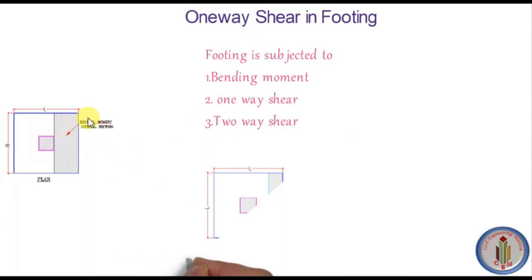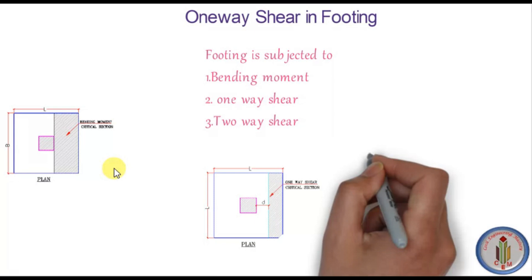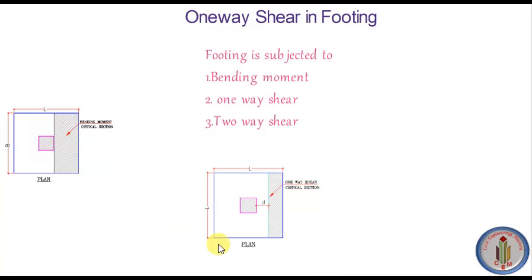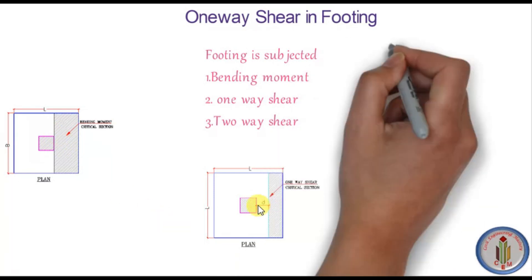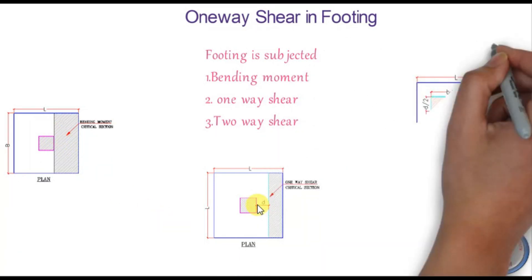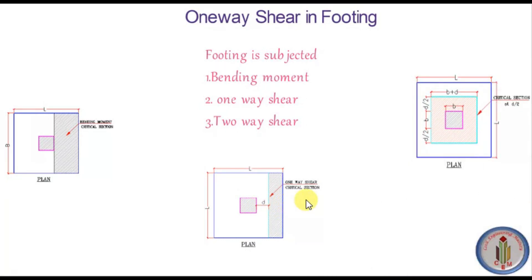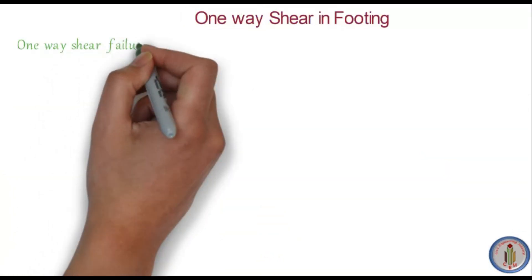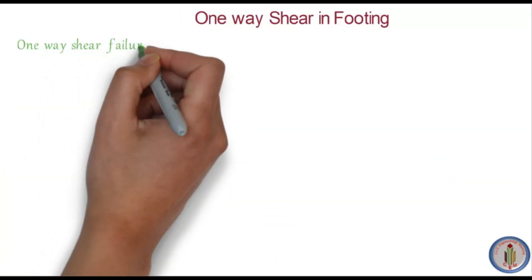The critical section for bending moment is at the face of the column. The critical section for one-way shear is at a distance d from the face of the column. The critical section for two-way shear is at a distance d/2 from the face of the column. Now let's discuss how one-way shear failure occurs in footing and why the critical section is considered at a distance d from the face of the column.